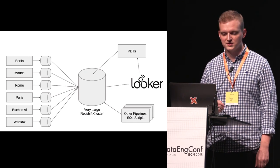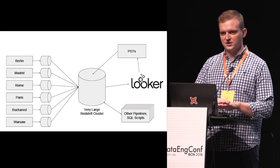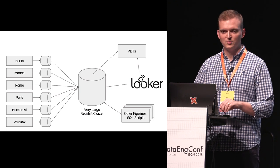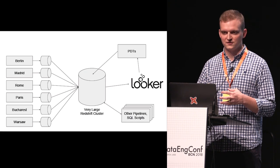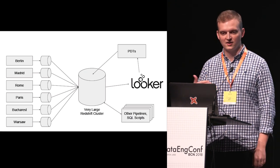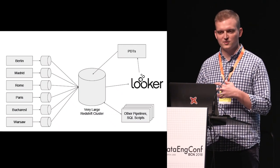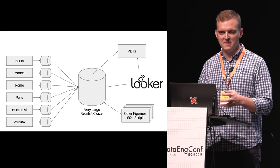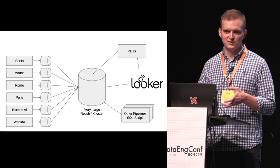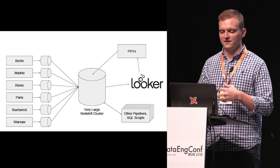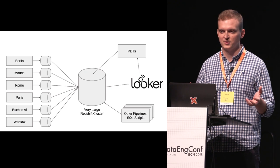They had physical presences in a number of major cities. They had data pipelines that would take those systems — the application databases and the API endpoints — and replicate all the data out. They'd do some simple transformations to get all of the data into a consistent schema across the different cities, then warehouse it into a very large Redshift cluster. They had other processes that worked off of that main pipe: reading data out of Redshift, transforming it, writing it back in, building views. And then finally they used Looker as their BI tool, so their analysts ultimately just ran queries in Looker.